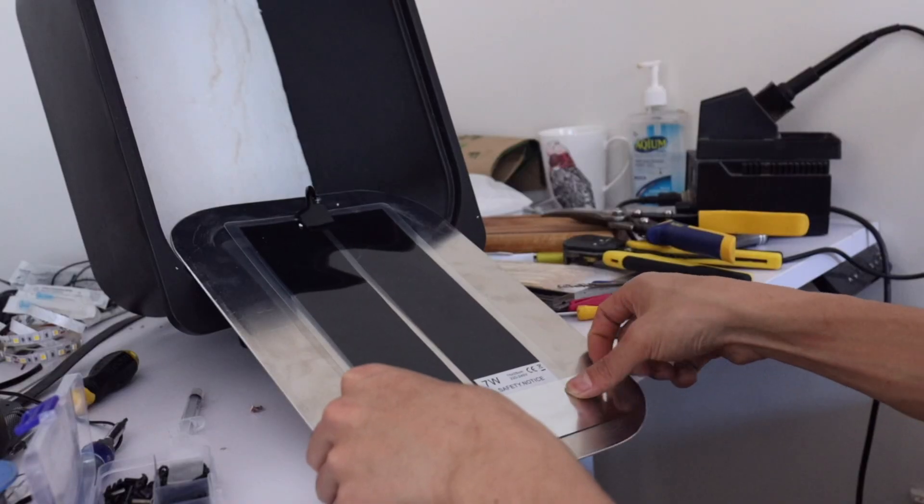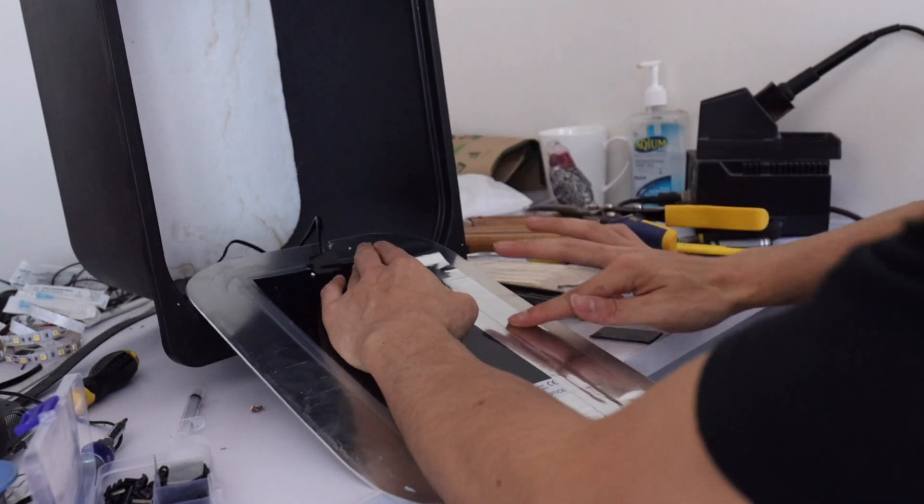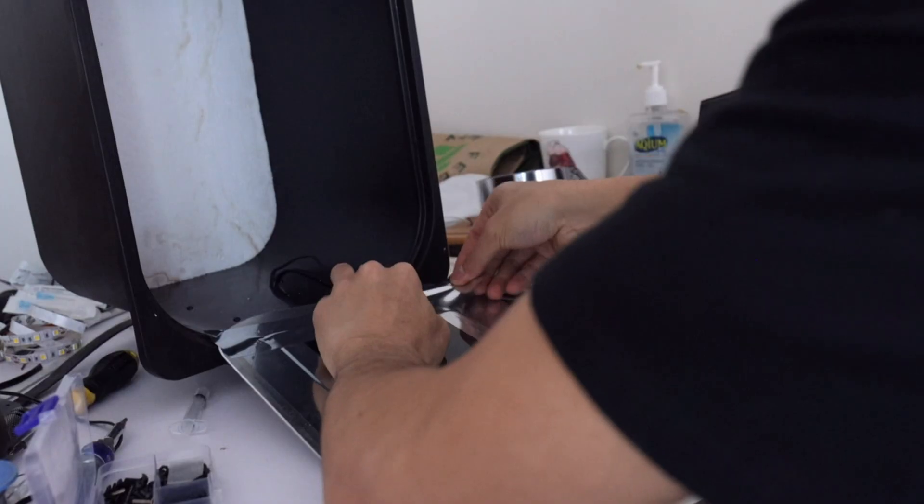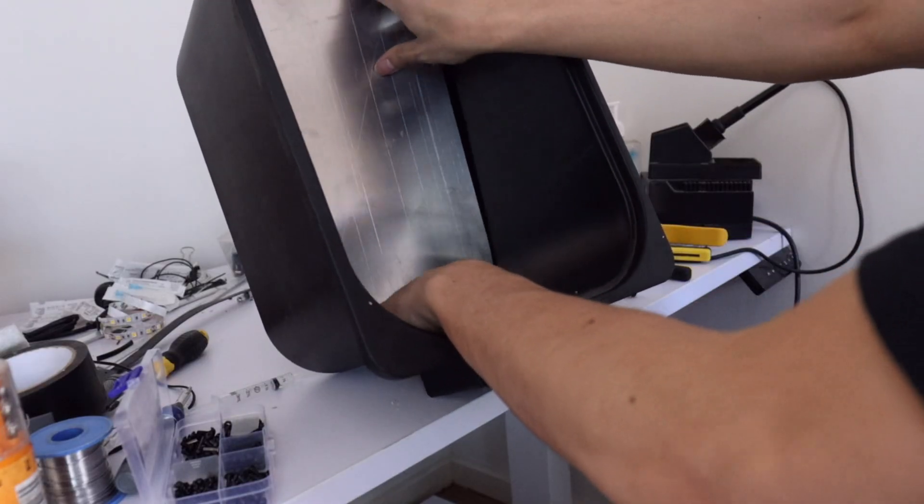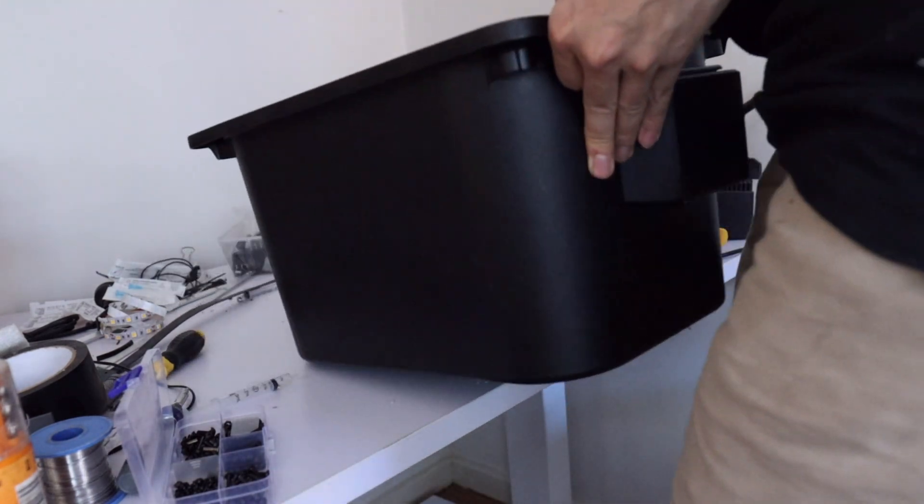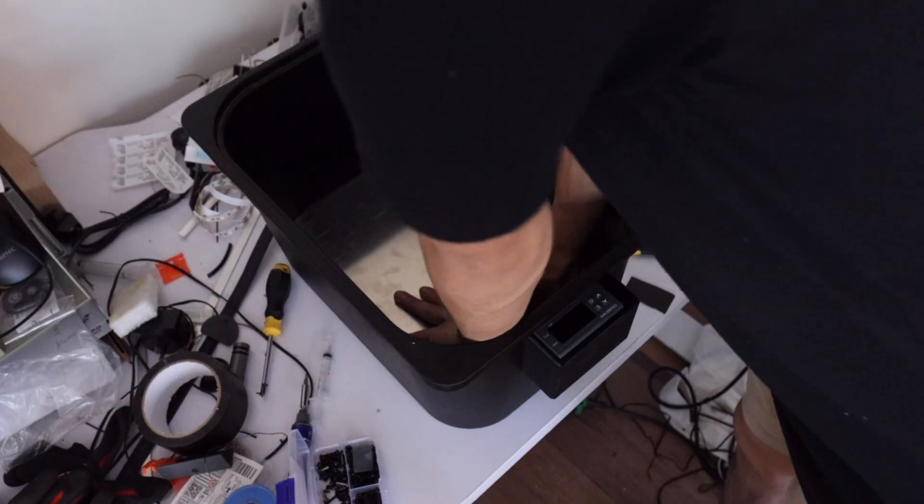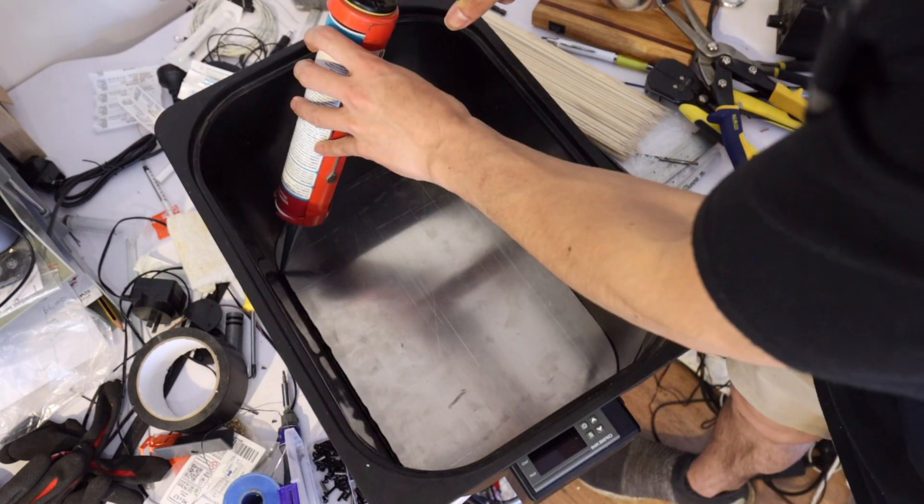The heat mat was adhered to the aluminum sheet using aluminum tape. This ensures that there is plenty of contact between the two parts for good heat transfer. Once everything was in place, I siliconed the aluminum plate into place.